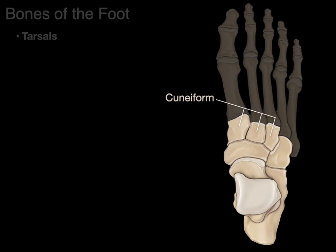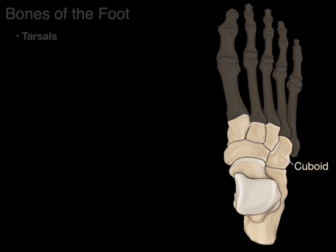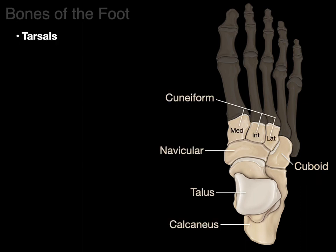Next we have the cuneiform bones. Cuneiform is Latin for wedge-shaped, reflecting the shape of these bones, and there are three of them: the medial cuneiform, closest to the medial side of the foot, then the intermediate and lateral cuneiform bones. Finally, there's the cuboid bone, which is Greek for cube-shaped, and it articulates with the cuneiforms, the calcaneus, and the navicular bone. That gives us our seven tarsal bones.